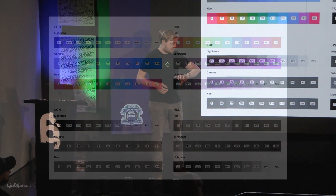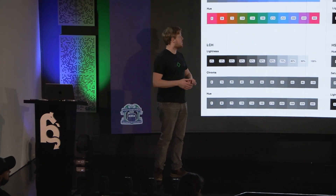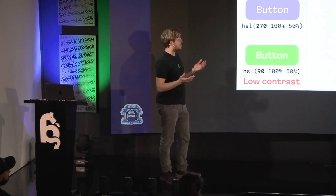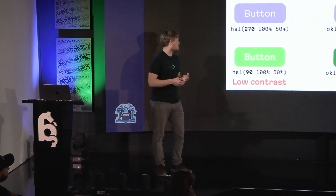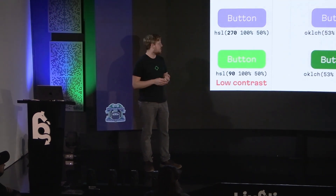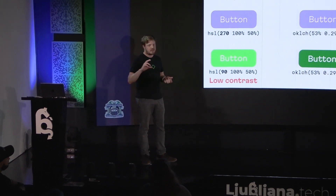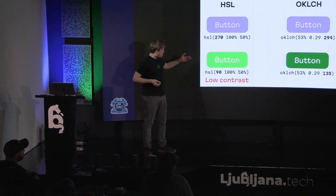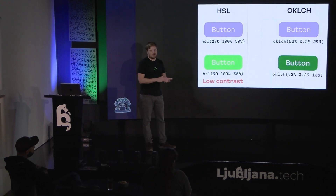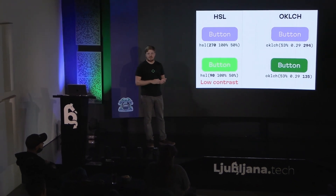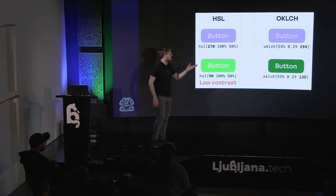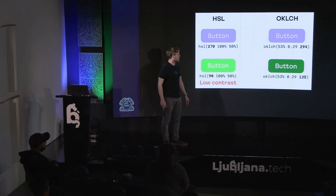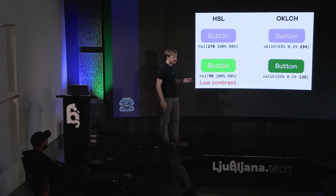Why that's important — take buttons as an example. In HSL, if you were to keep the lightness and saturation values the same but just rotated the hue, you would get into low contrast problems, which can lead to user experience issues on the front end. Whereas in OKLCH, it's much more consistent in terms of lightness.